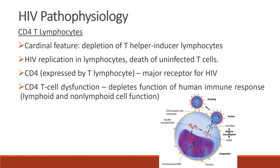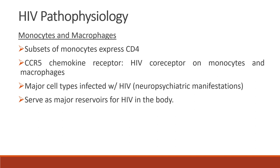For pathophysiology specifically in the CD4 T-lymphocyte, the cardinal feature is the depletion of T-helper-inducer lymphocytes. HIV replicates in lymphocytes and causes death of uninfected T-cells. The CD4 molecule expressed by T-lymphocytes is the major receptor for HIV. In CD4 T-cell dysfunction, this depletes the function of the human immune response in both lymphoid and non-lymphoid cell function. For monocytes and macrophages, some subsets of monocytes express CD4, and the CCR5 chemokine receptor is the HIV co-receptor on monocytes and macrophages. These cells serve as a major reservoir for HIV in the body.